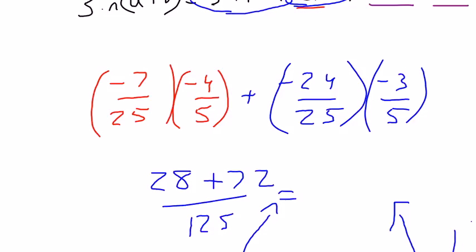So you get 28 plus 72 is 100 over 125. This is 4 quarters, this is 5 quarters. Your answer is 4 5ths for number 52.